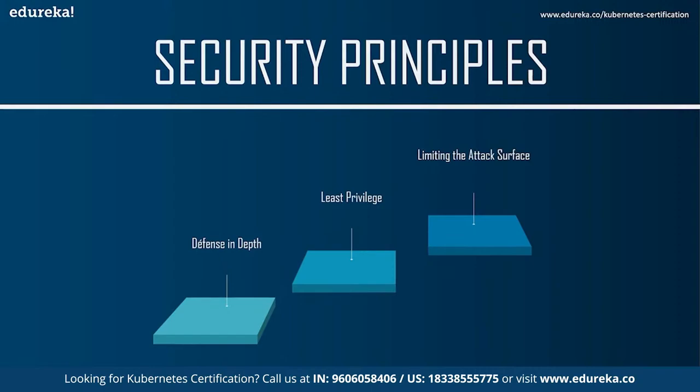The second Kubernetes security principle is the principle of least privilege: restrict access so that different components can access only the information and resources they really need to operate correctly. In the event of a component being compromised, an attacker can reach only the subset of information and resources available to that component, which limits the blast radius of the attack.